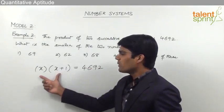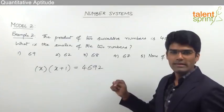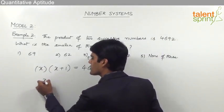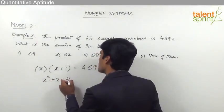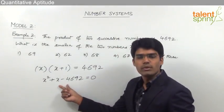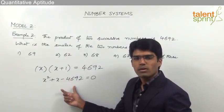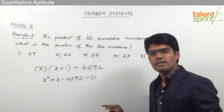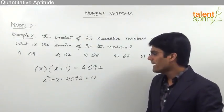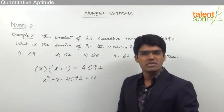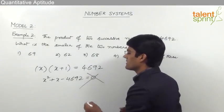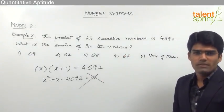As given, x(x+1) = 4692. Expanding gives x² + x − 4692 = 0. This is a quadratic equation in x, which would give two values — one likely negative. Solving this quadratic equation is not easy and becomes a lengthy procedure, so let us understand how to solve the question without solving the quadratic.